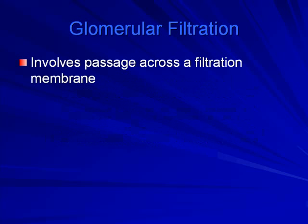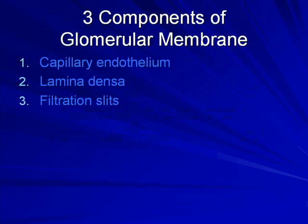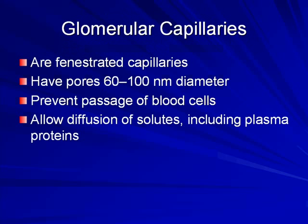Glomerular filtration involves the passage across the filtration membrane — the cells or cell lining involved in the glomerulus. There are three components of the glomerular membrane: capillary endothelium, the lamina densa, and the filtration slits. Glomerular capillaries are fenestrated — little tiny windows in the capillaries, essentially pores.